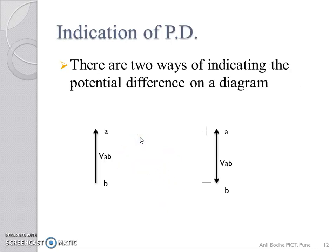Now, indication of potential difference. There are two ways of indicating the potential difference on a diagram. First one is, it can be indicated by a line with an arrow pointing toward the point whose voltage is higher than the other point.